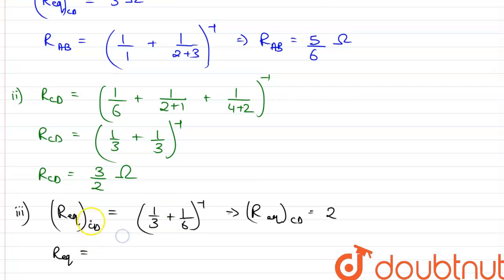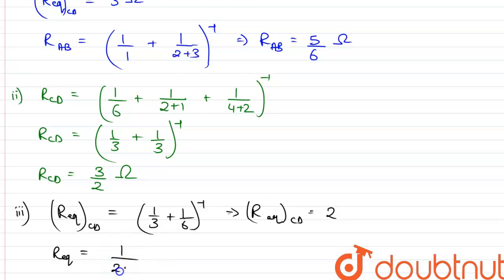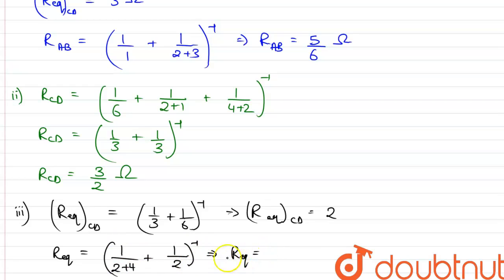R_cd equivalent is two. Therefore, the total resistance across point E and F, denoted by R_equivalent, equals one over (two plus four) plus one over two, whole inverse. On calculating this, R_equivalent equals three divided by two ohms. Therefore, these are the answers. Thank you.